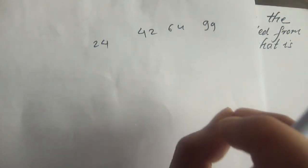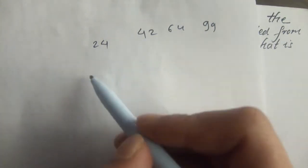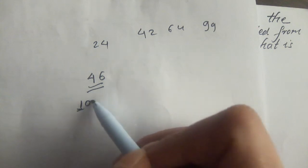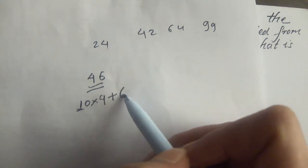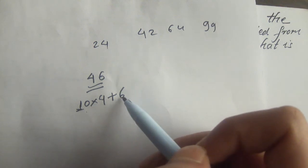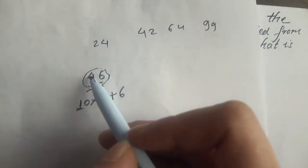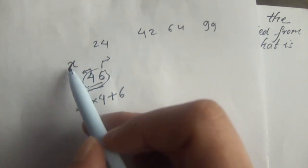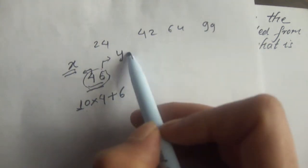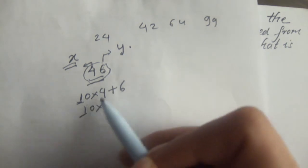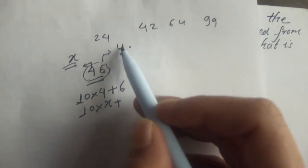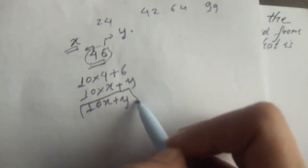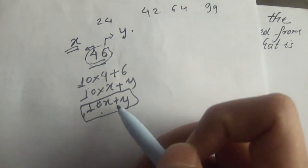For the original two-digit number, there is a general expression. For example, if we have 46, we can write it as 10 times 4 plus 6, which gives us 40 plus 6 equals 46. Here, 6 is the one's place and 4 is the ten's place. If we let the ten's place be x and the one's place be y, then the general expression is 10x plus y. This expression can represent any two-digit number.